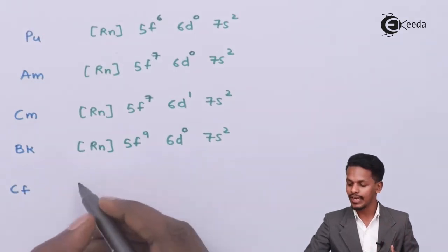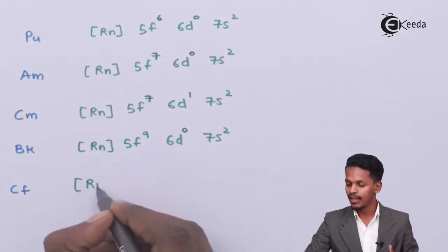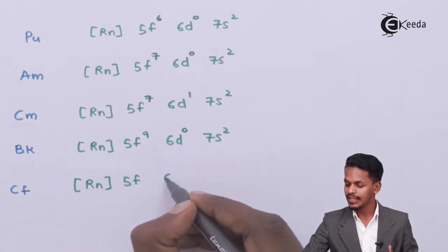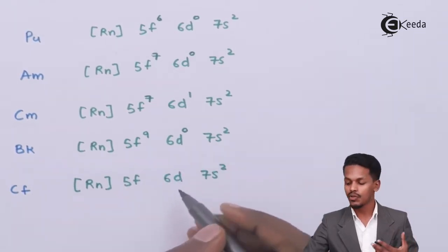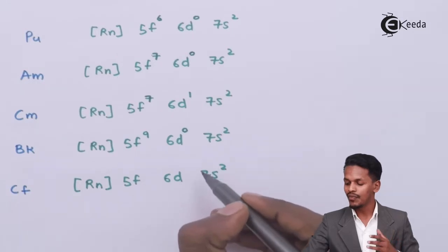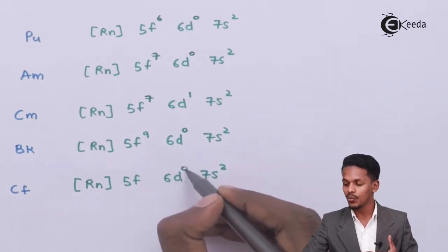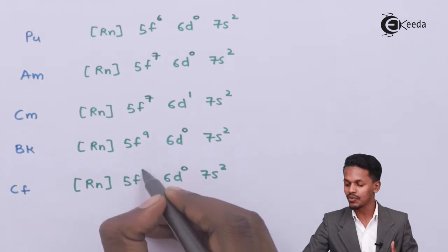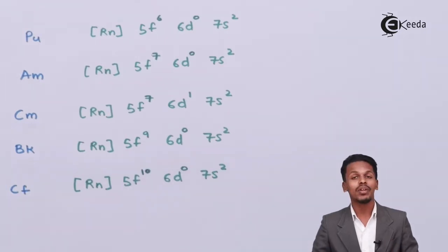For californium, the electronic configuration is [Rn] 5f¹⁰ 6d⁰ 7s². The 6d orbital remains vacant with zero electrons, and there are ten electrons in the f orbital.